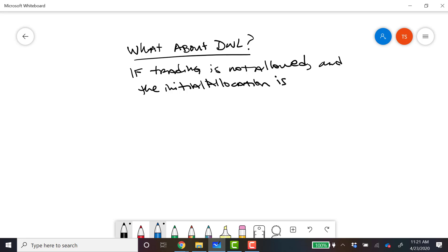Okay, so for deadweight loss, we have kind of a similar thing. The difference is that we're trying to find the area that is lost. So if trading is not allowed and the initial allocation is suboptimal, which is virtually guaranteed because how could it be known, then there will be deadweight loss.